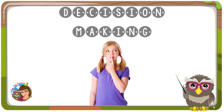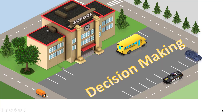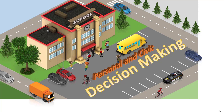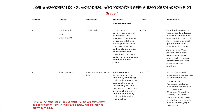Hi, this is Carolyn Wilhelm from Wise Owl Factory, and this is a short video preview of my decision-making product for about grade four. Students need to learn how to make personal and civic decisions based on criteria and not just gut feelings, and this is especially helpful later in life.